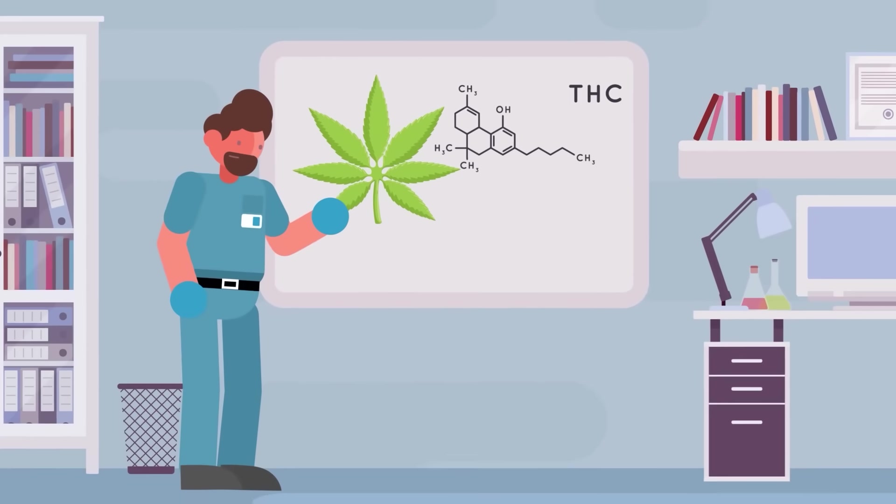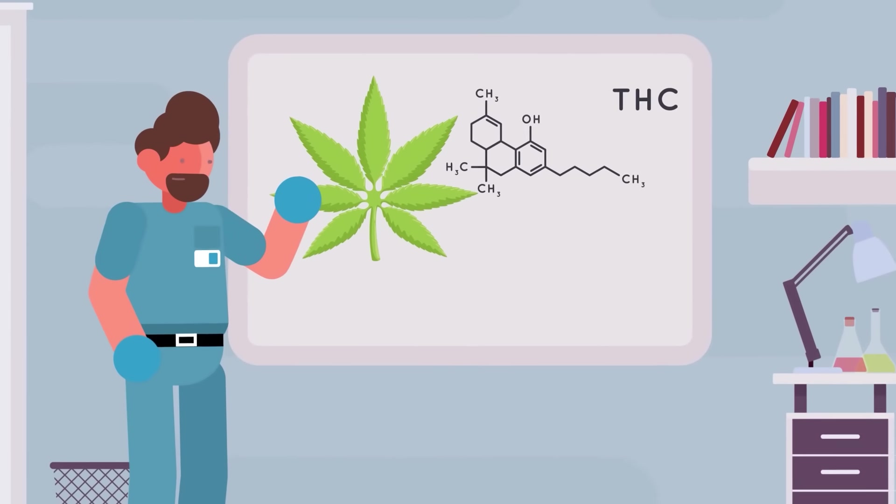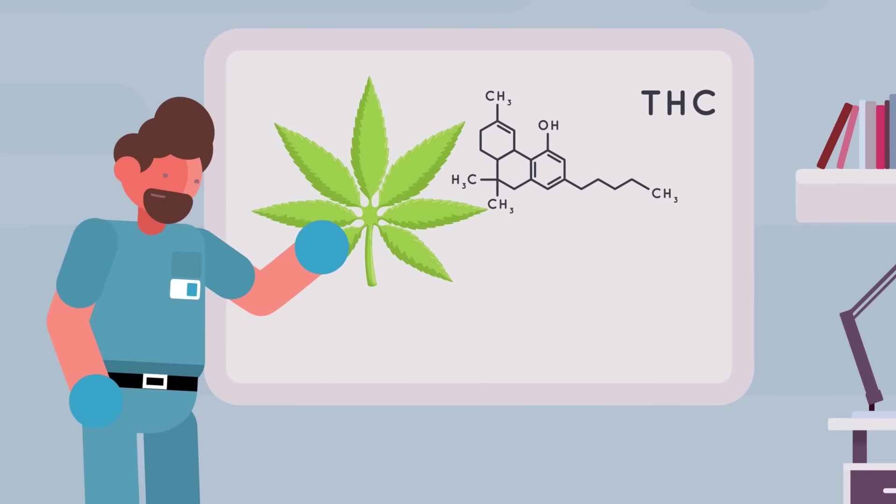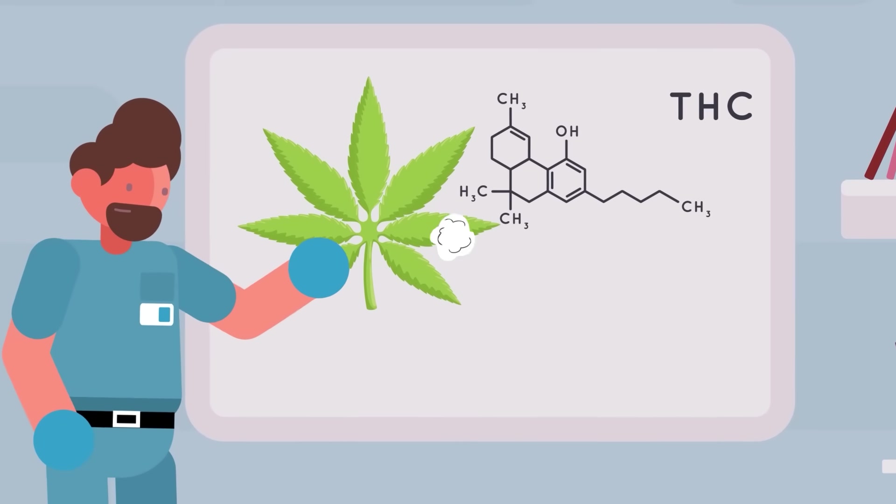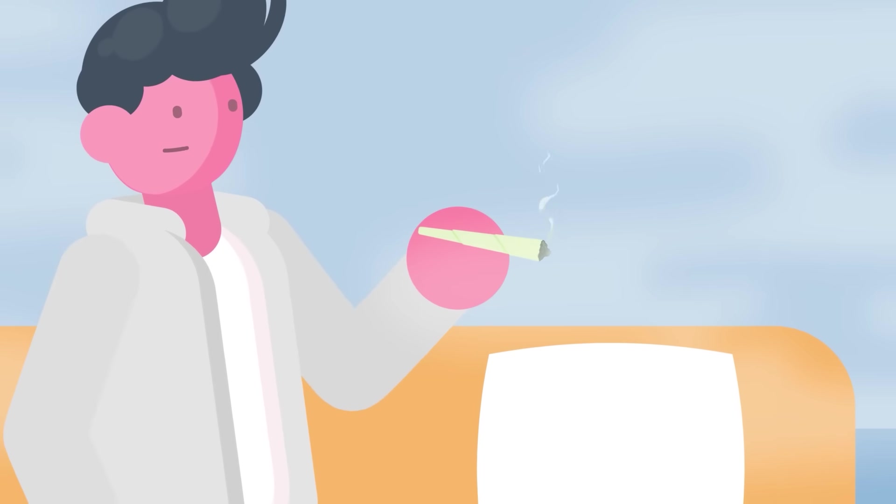The feeling of being high comes from the main active component in marijuana, THC. Typically found in much greater quantities than CBD, THC can have a powerful psychoactive effect. To see what that means in practice, let's follow it as it enters the human body.